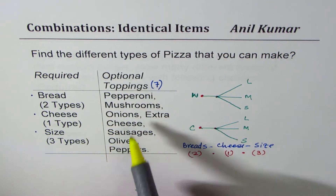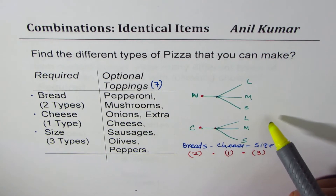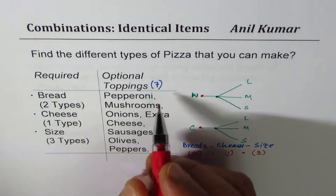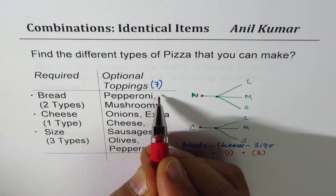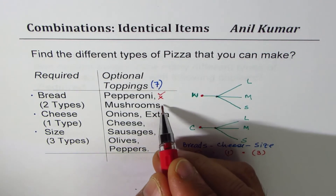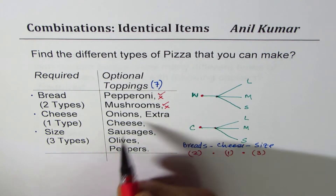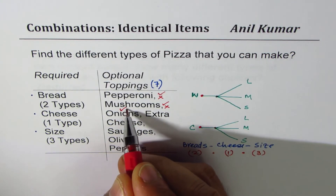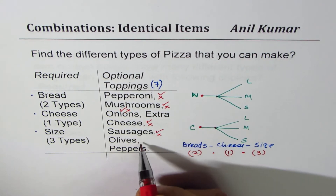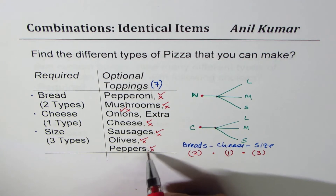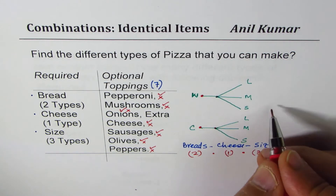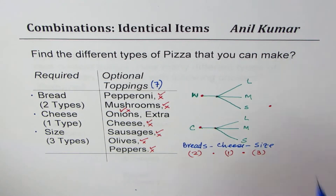Now with these six base combinations, I could have any combination of options — I may not have any option at all, and that is also a valid option. If we consider pepperoni, we may have it or we may not have it — so there are two choices. Similarly for mushrooms, onions, extra cheese, and sausages — for all seven items we have two choices each.